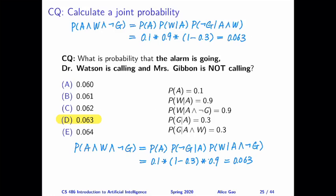The purpose of these two questions are to help you practice calculating a probability over three variables using the chain rule.